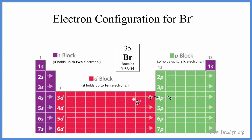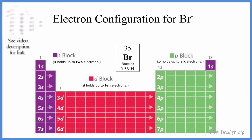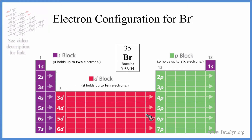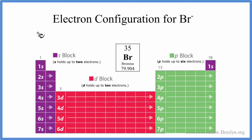We'll use this periodic table here broken up into these orbitals to write the configuration. You can also use this chart here if you like — there's a link in the description — but I think this is probably a better way to do it. So let's write the electron configuration. We have 35 electrons. We'll start out with 1s, which can hold up to 2, so we have 1s².